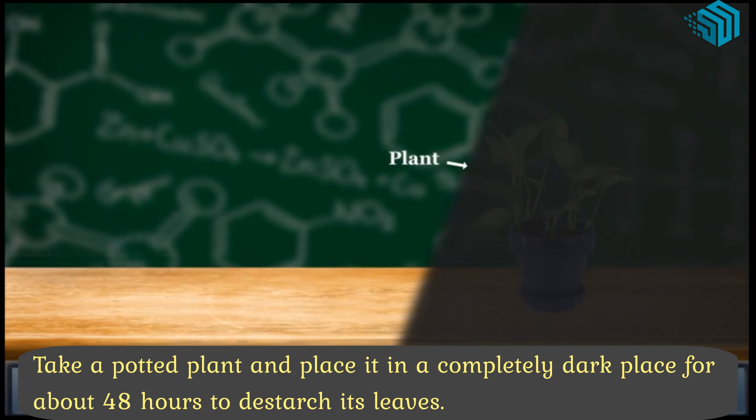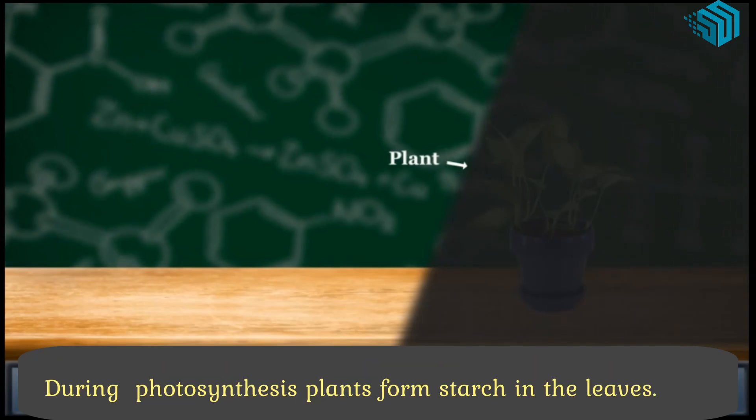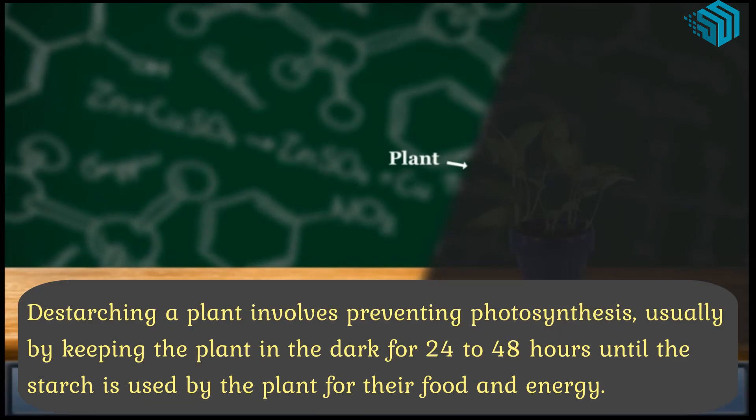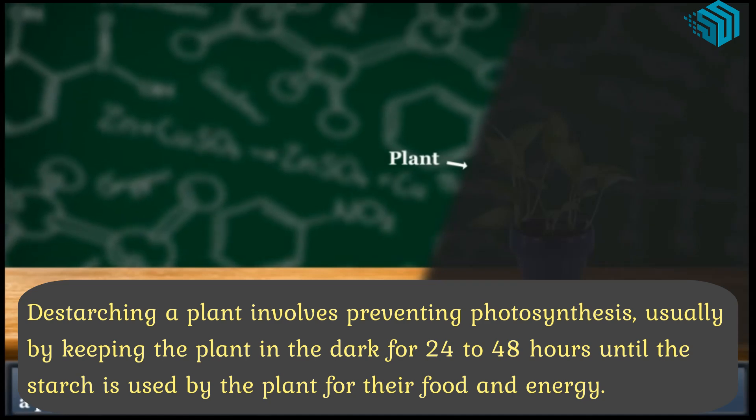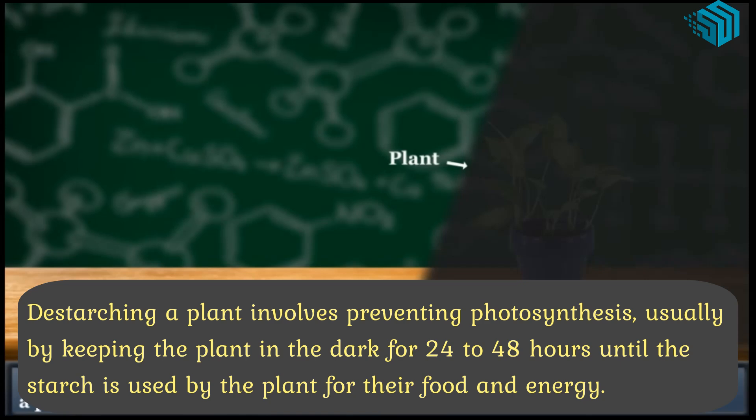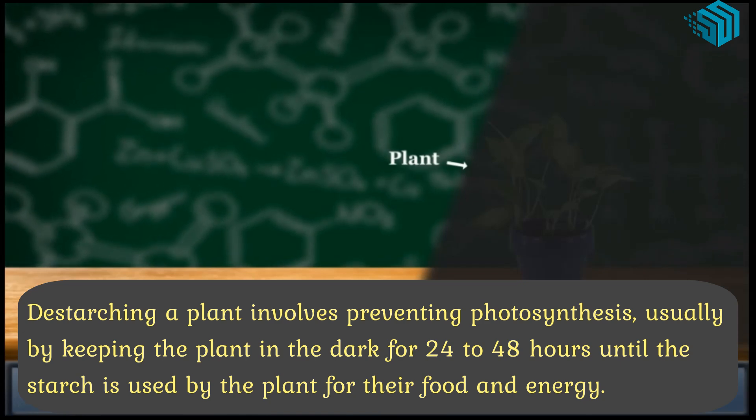During photosynthesis plants form starch in the leaves. Destarching a plant involves preventing photosynthesis, usually by keeping the plant in the dark for 24 to 48 hours until the starch is used by the plant for their food and energy.